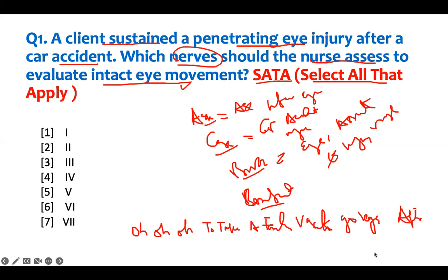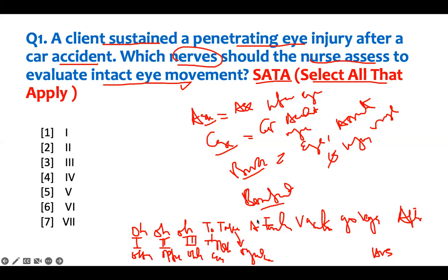So: CN I is the olfactory — that's smell. CN II is your optic — that is visual acuity. CN III is the oculomotor — that's eye movement. CN IV is trochlear — also eye movement. CN V is trigeminal — mostly sensory.